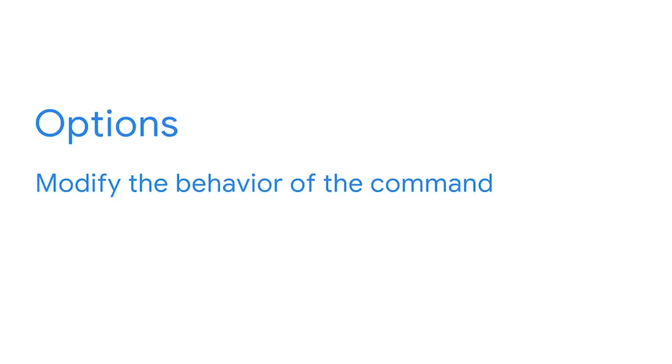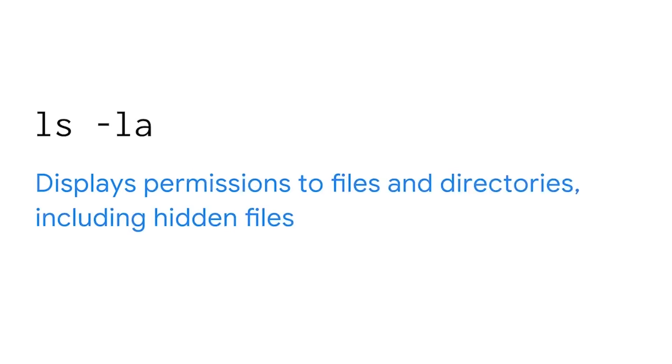So how do we check permissions? First, we need to understand what options are. Options modify the behavior of the command, and the options for a command can be a single letter or a full word. Checking permissions involves adding options to the ls command. 'ls -l' displays permissions for files and directories. You might also want to display hidden files and identify their permissions. Hidden files, which begin with a period before their name, don't normally appear when you use ls. Entering 'ls -a' displays hidden files. Then you can combine these two options: entering 'ls -la' displays permissions for files and directories, including hidden files.